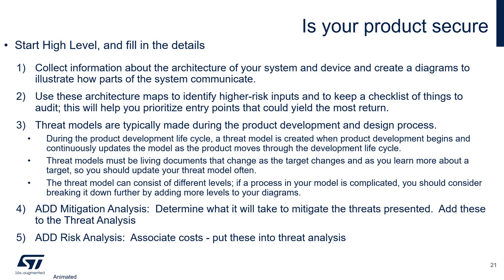Start high-level and fill in the details. Collect information about the architecture of your system and make diagrams and illustrations to see how the system communicates with other parts. Use these maps to identify high-risk inputs and outputs and keep a checklist of things to audit. This will help you prioritize the most important entry points that could yield the most return.